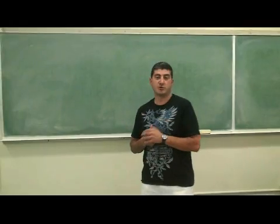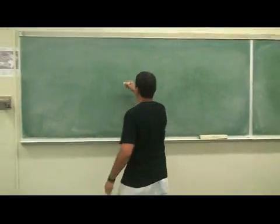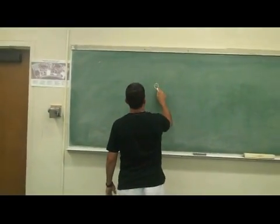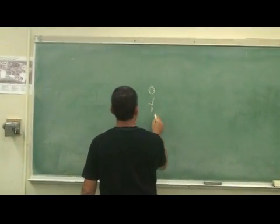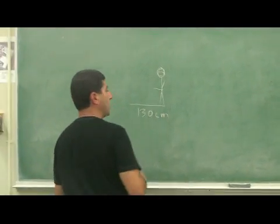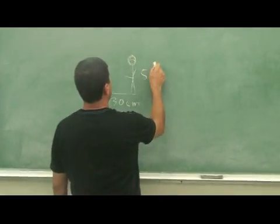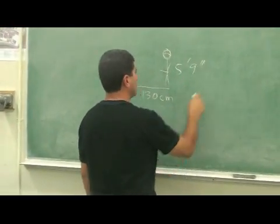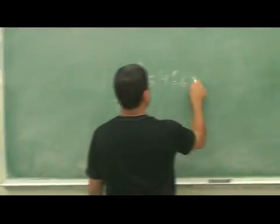We're back in after the shadow experiment. So we saw that I was standing and my shadow was 130 centimeters. My height is roughly 5 foot 9 inches, which is 69 inches.